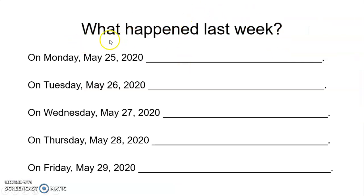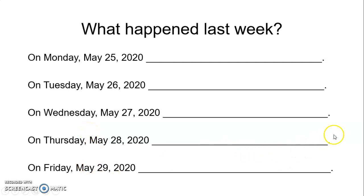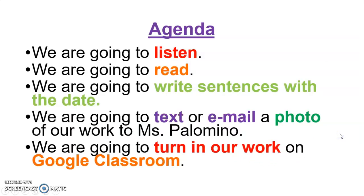Al final, ustedes van a entregar algo así. What happened last week? ¿Qué pasó la semana pasada? Quiero que ustedes me digan: ¿Qué pasó on Monday, May 25th? ¿Qué pasó on Tuesday, May 26th? ¿Qué pasó on Wednesday, May 27th? ¿Qué pasó on Thursday, May 28th? ¿Y qué pasó on Friday, May 29th? So our agenda today: we are going to listen, we are going to read, we are going to write sentences with the date, we are going to text or email a photo of our work to Ms. Palomino, or we are going to turn in our work on Google Classroom.